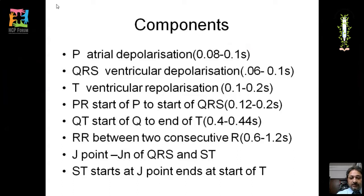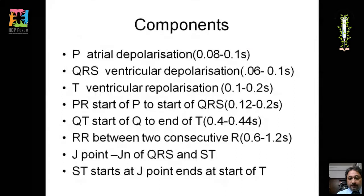The PR interval starts from the beginning of the P wave to the start of the QRS, with a duration of 0.12 to 0.2 seconds. The QT starts from the start of Q to the end of T, duration 0.4 to 0.44 seconds. The RR interval is between two consecutive QRS complexes. The J point is the junction of the QRS complex and the ST segment, which ends at the start of the T wave.